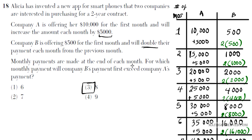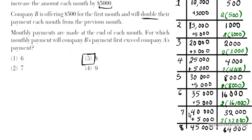For problem 18, you create a table to see when B exceeds A. For A, you go by 5,000 each month starting with 10,000 — keep adding 5,000 until B's payment exceeds A's. For B, you start with 500 and double every month, meaning multiply by 2. Going through month by month — first, second, third, fourth, fifth, sixth, seventh — at the eighth month, that was the first month that the payment for B exceeded that of A. So the answer is option number three.